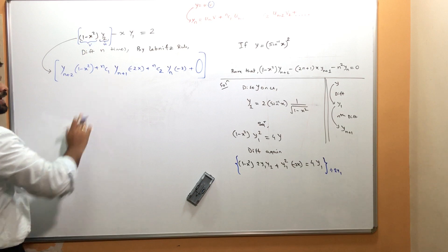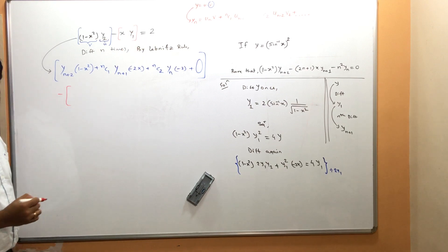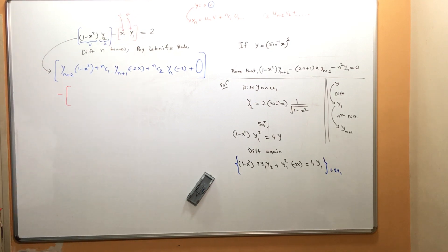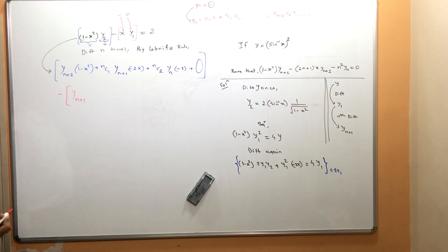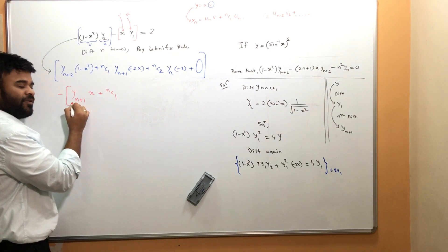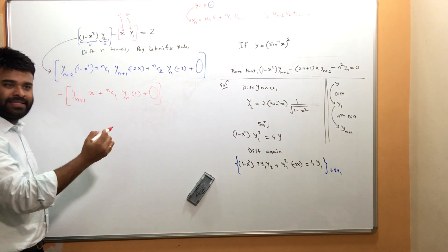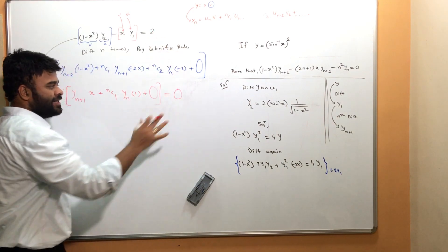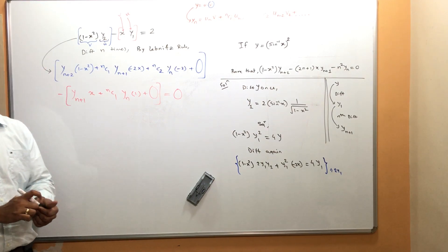Now apply Leibniz to the second bracket, x·y₁. Here x is v and y₁ is u. The first term gives y_{n+1}·x. The second term is nC1·y_n·1 (since the derivative of x is 1). The next term is zero because differentiating 1 gives 0. The right-hand side is 0 since the derivative of a constant is 0.